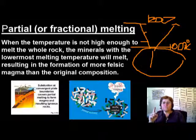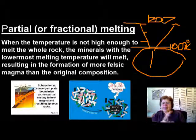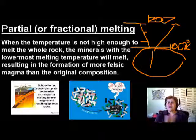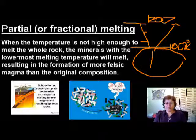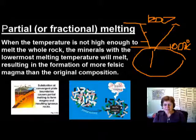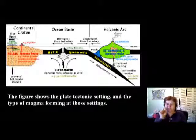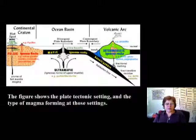We're not going to get a mafic magma but rather a felsic kind of magma. This is what we call fractional melting — not everything melts, only the minerals with higher silica content. Therefore you're going to get a much more felsic magma than the original rock would provide if the whole thing had melted. This really explains everything about the different magmas and their formation as defined by the plate tectonic setting.